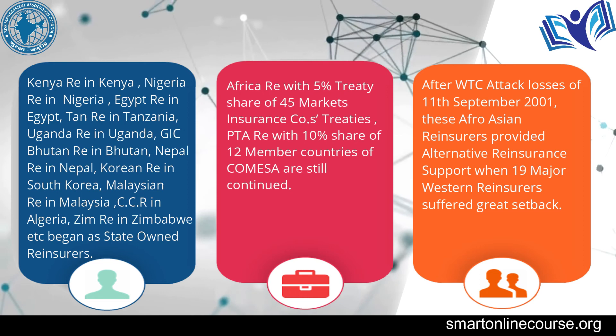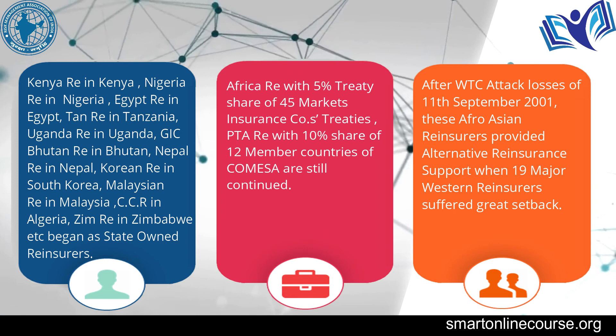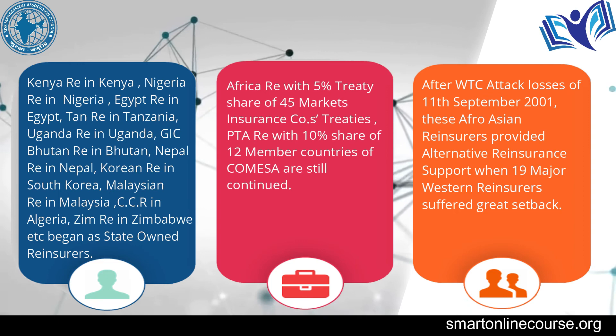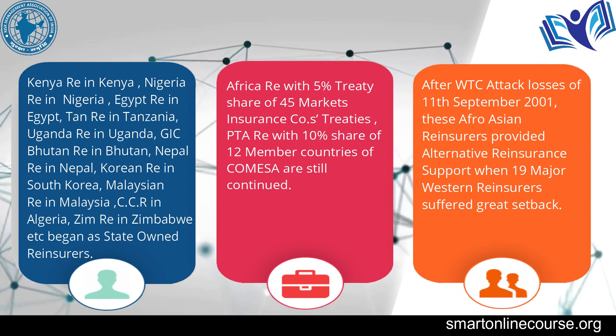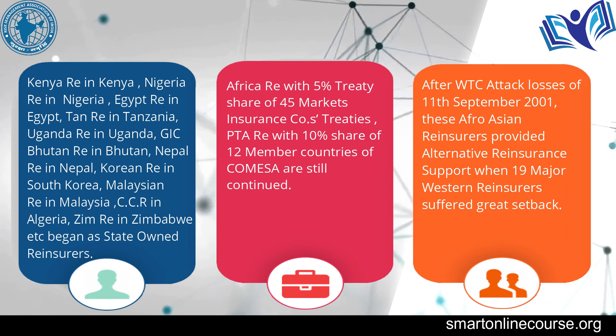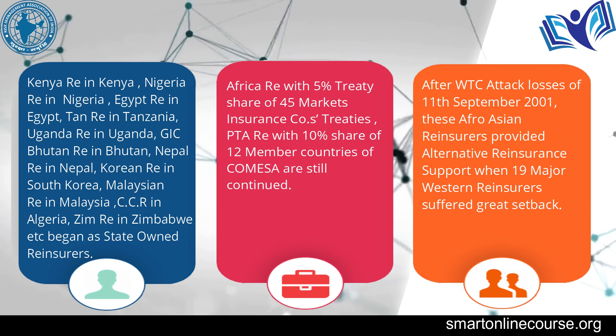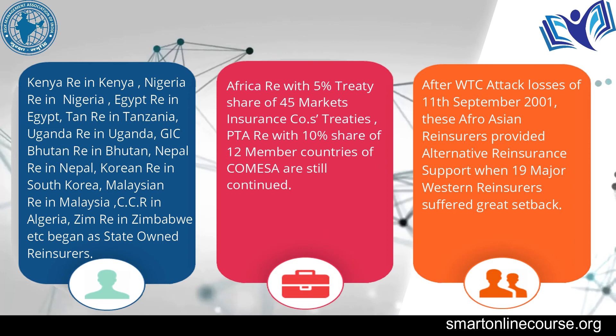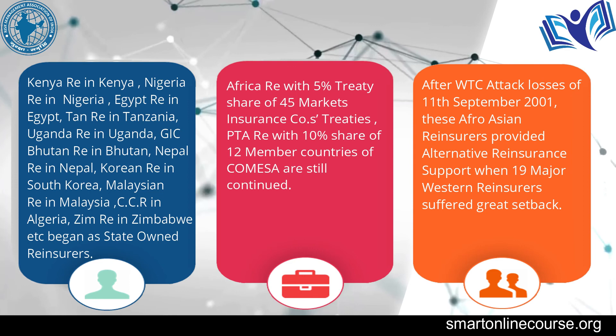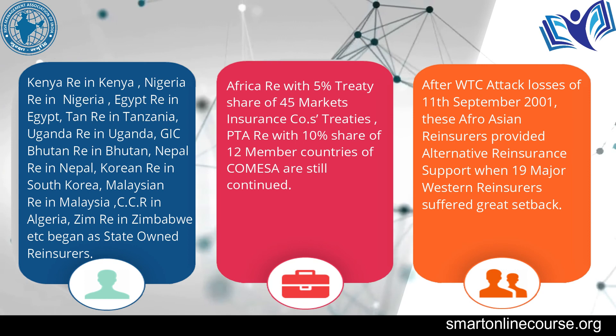Many of them had to close down. Munich Re suffered its heaviest losses in its 125-year history at that time. So these Western reinsurers were not strong enough to accept Afro-Asian business. The regional reinsurers in Asia and Africa — led by GIC, Asian Re, Singapore Re, South Korean Re — started giving support. Thus these medium-sized reinsurers became important after 2001. Today these nine major reinsurers from the Afro-Asian region are equally strong, holding a large share of reinsurance business in Afro-Asian markets.